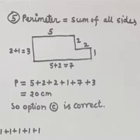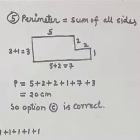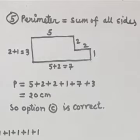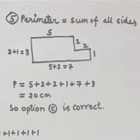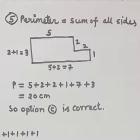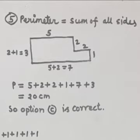Question number 5: perimeter is the sum of all sides. According to the figure, P = 5 + 2 + 2 + 1 + 7 + 3. After adding, we get 20 cm. So option C is correct.